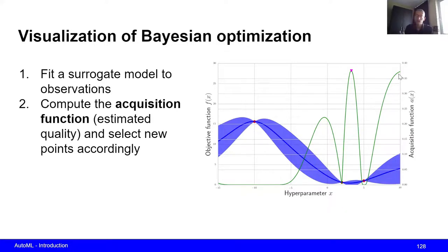Now, what this kind of means is that the acquisition function is high in areas where we know that there are good performing models, but also high when we are uncertain. So this balances our exploitation, so exploiting our knowledge of good spaces or good regions in hyperparameter space, as well as exploration. So we want to explore points that are associated with quite some uncertainty.